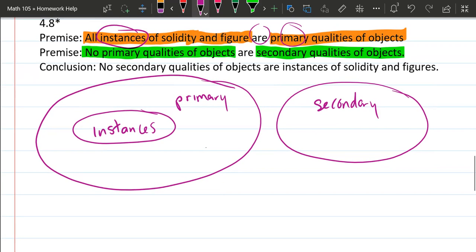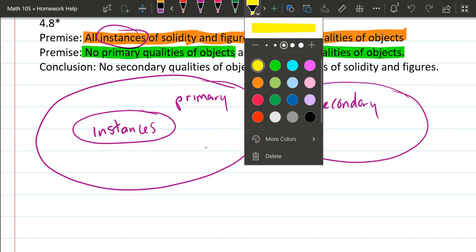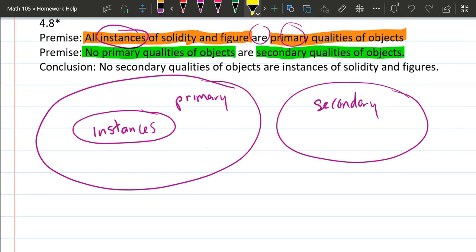And now we're ready to analyze the conclusion. Let's go ahead and highlight in another color. So no secondary qualities are instances. And let's look at where the secondary qualities are. They're all here. Is it true that none, it says no or none, are instances, whereas instances, it's way over here, completely separate. So this conclusion has to be true.